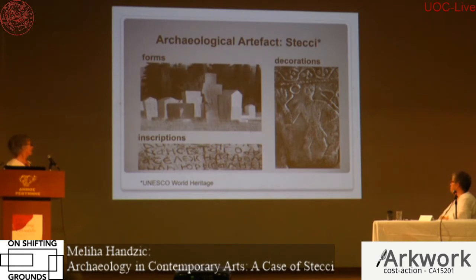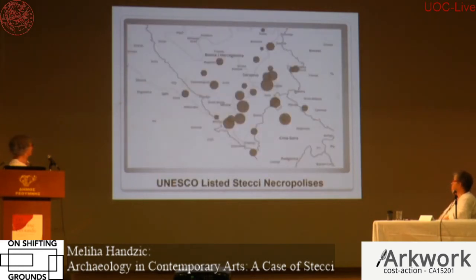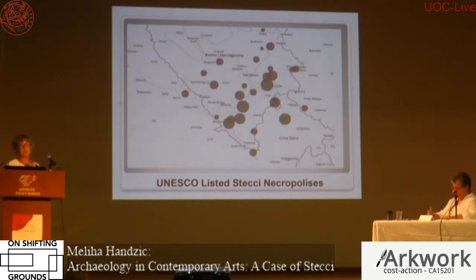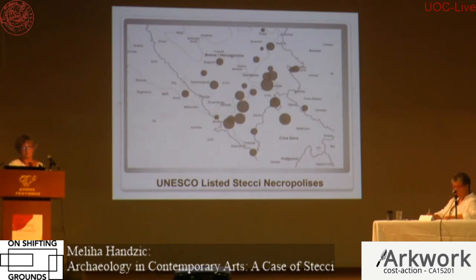These are archaeological artifacts that I was trying to use and see how artists are inspired by them. A couple more things about Stećci: these are only those that are UNESCO listed — 28 of those. But there are 3,000, maybe more, necropolises throughout Bosnia and also spilling into neighboring countries. They estimate about 70,000 actual stone tombstones, so it's huge, and not yet completely catalogued, which is maybe an interesting thing for VG2.